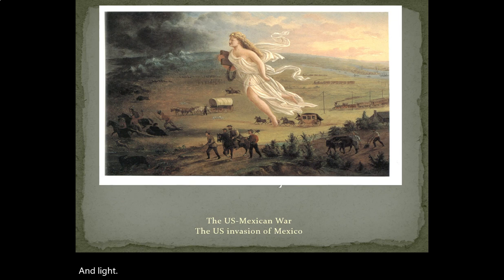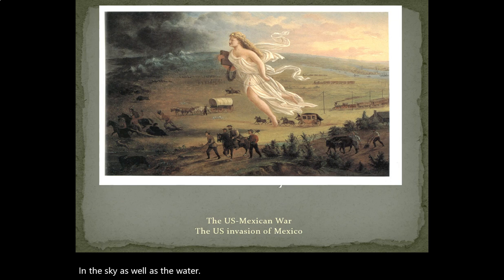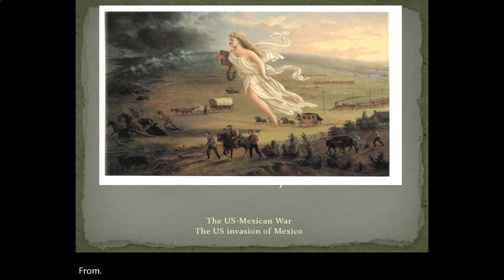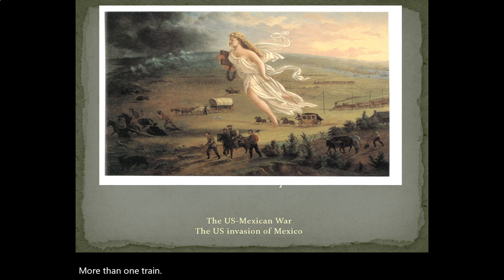On the left hand side, you can see a storm in the sky as well as the water. You can see buffalo and Native American people running away from settlers, from pioneers, from miners, from farmers. On the right hand side you can see a train, a couple of wagons, more than one train, and a port that is showing progress, showing quote-unquote civilization. You can see the contrast of one thing and another.